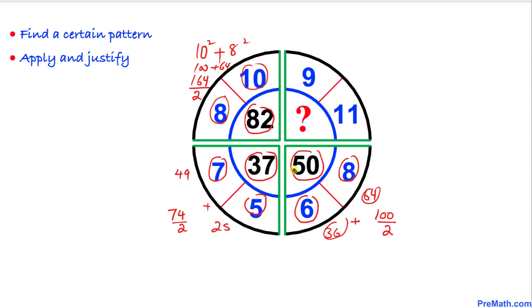And likewise we are going to apply the same pattern, same rule. Over here 9 square is going to give us 81 plus 11 square is going to be 121. And if we add these numbers we are going to get 202. And then we are going to divide it by 2. So we are supposed to get 101. So that means the number over here is going to be 101.